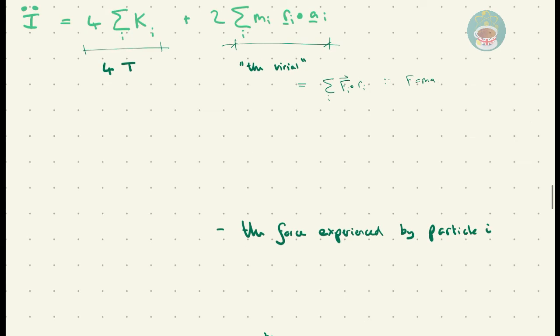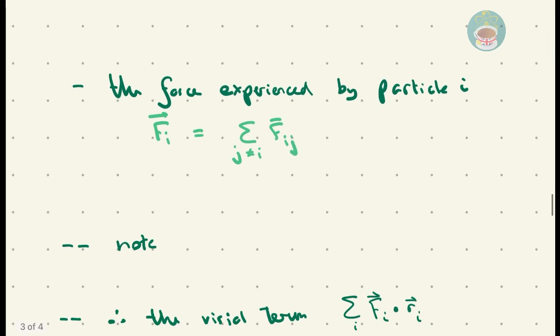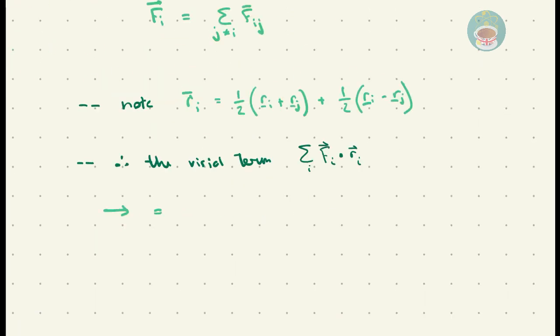We now delve into the virial for an individual particle i. Concerning the force experienced by this particle, it is simply the summation of all forces all other particles exert on i. At this point, we conjure a mathematical identity for the local vector position of particle i, Ri, and adjust the virial term.